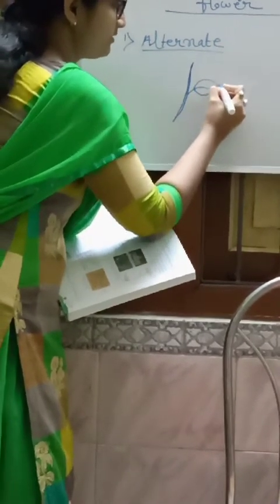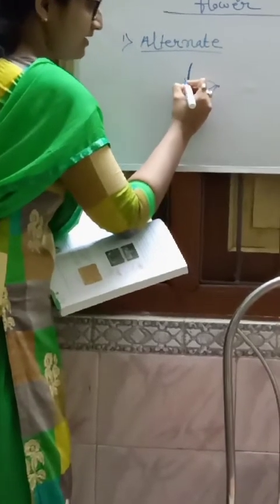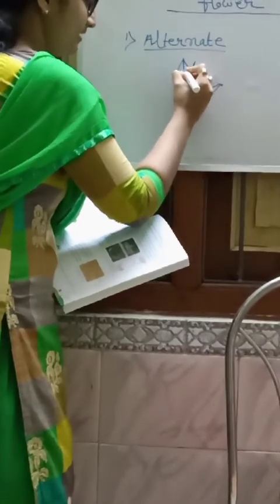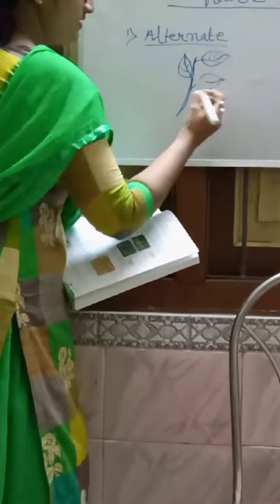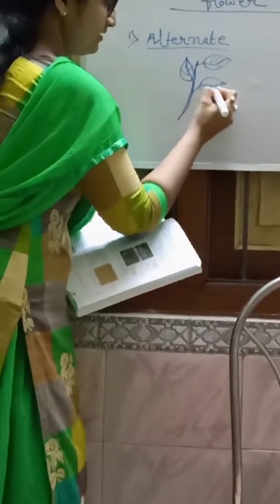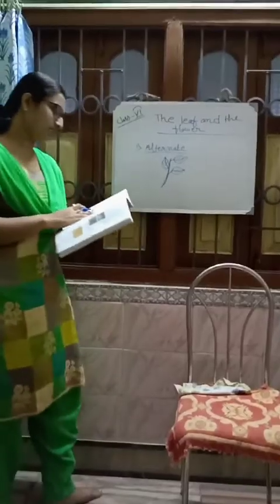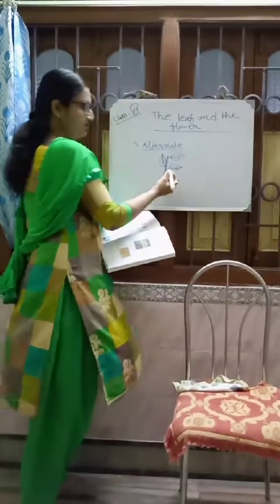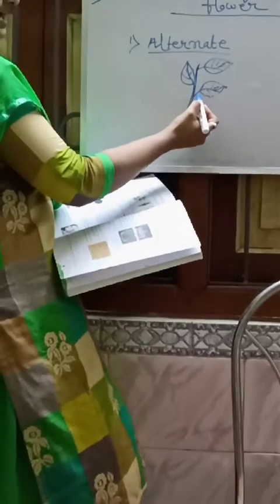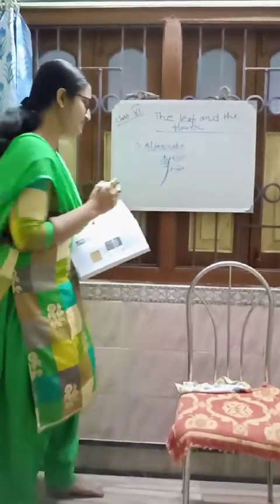In the alternate arrangement, one leaf is placed here, and another leaf is on the alternate side. Again a leaf, then another leaf on the alternate side. A single leaf arrives at each node alternately. This kind of arrangement is called alternate arrangement of leaves.